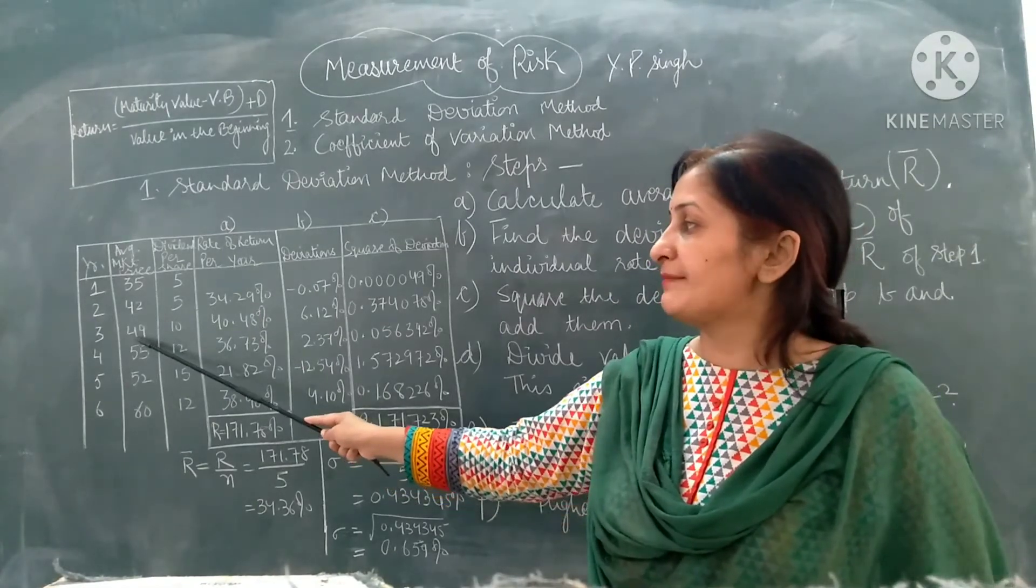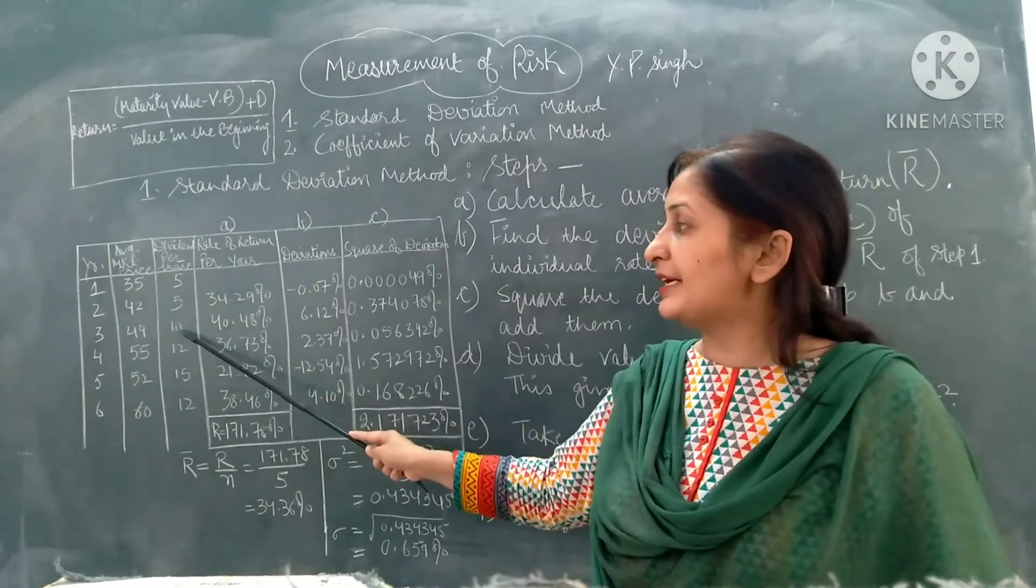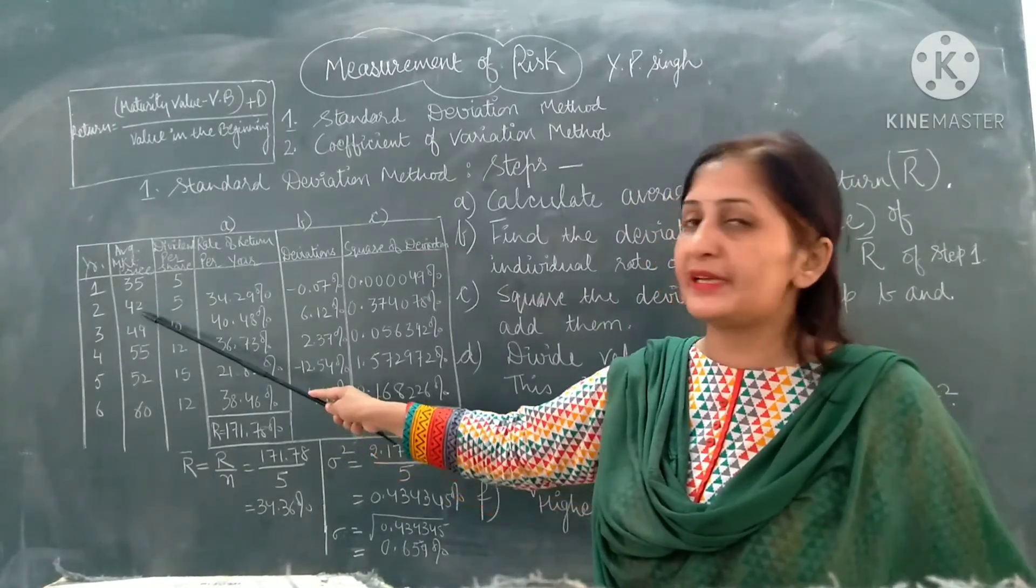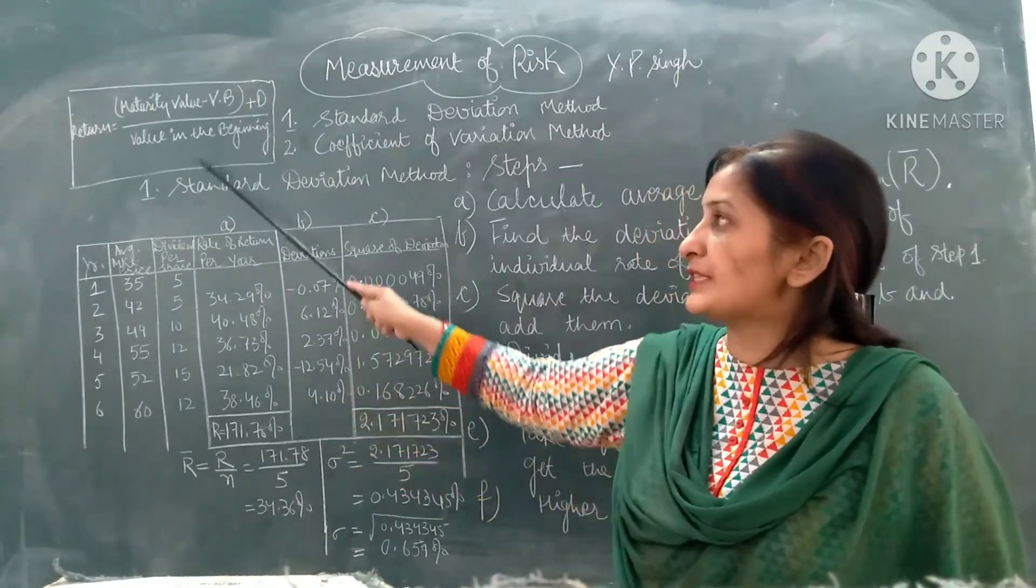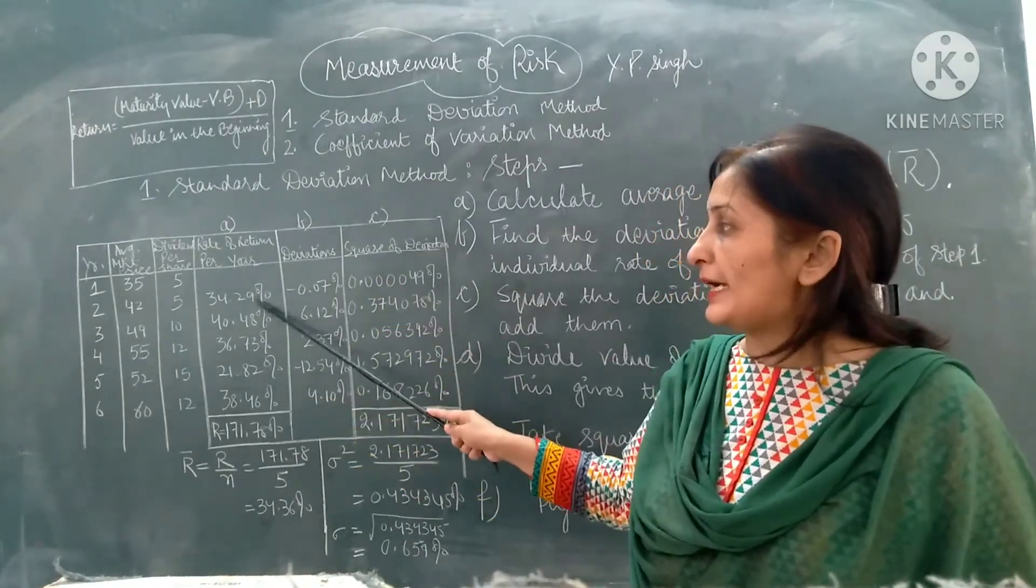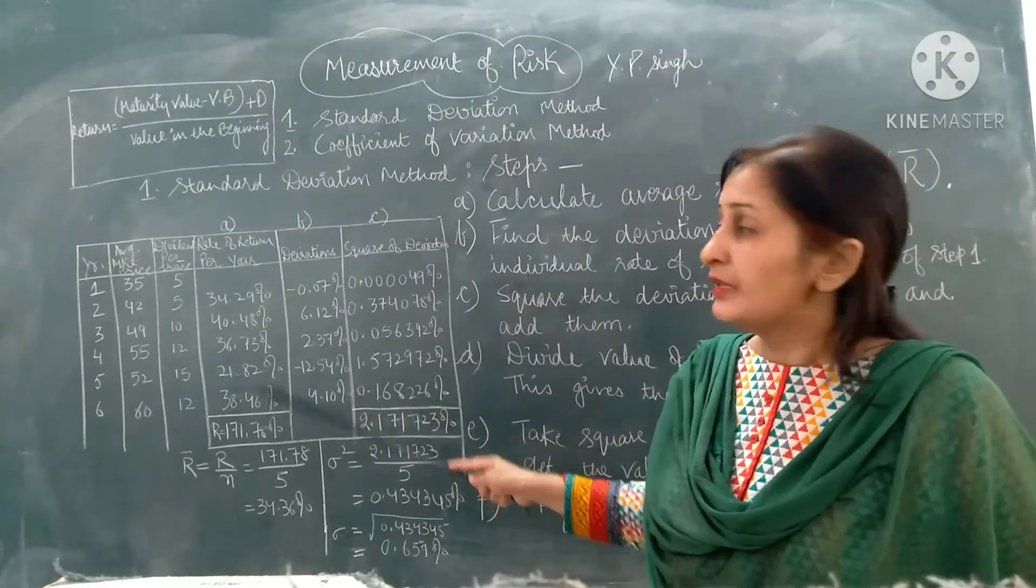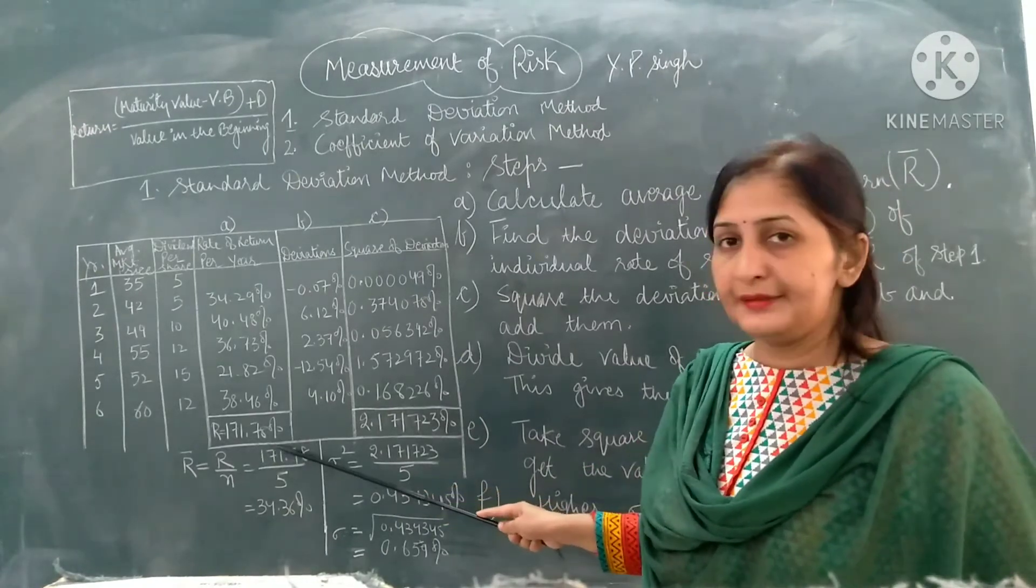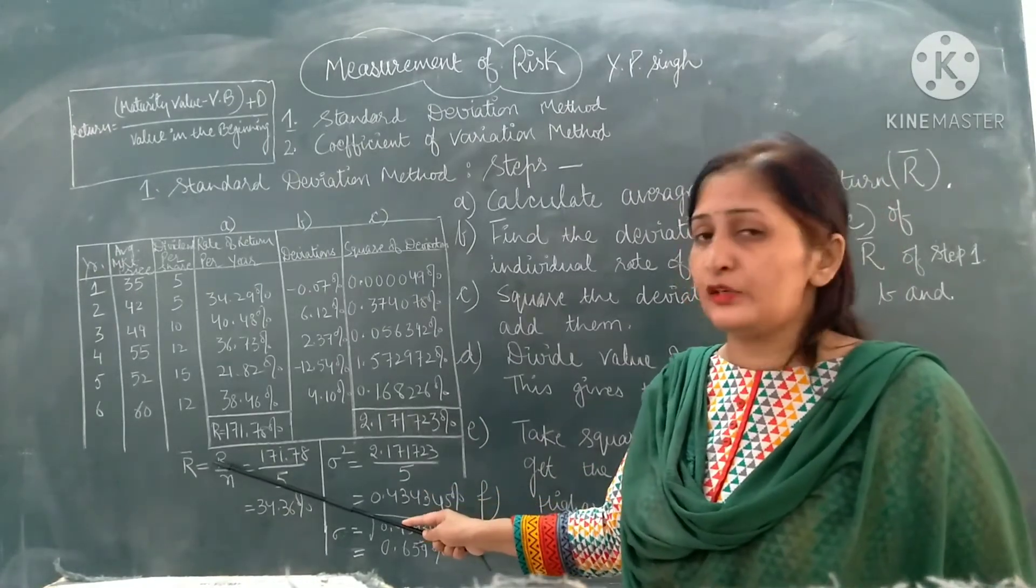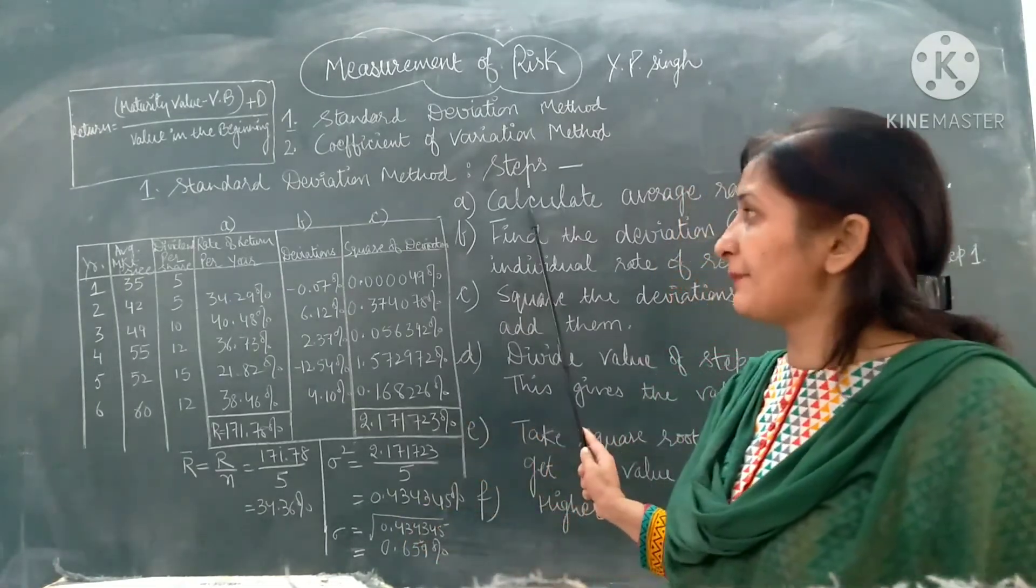For the next year, the value changes. Maturity value is 44, value at the beginning is 42, dividend is 10 and value at the beginning is 42. So by substituting the values in this formula, we will get individual return for different time periods. These values we add up, and we get the total return.